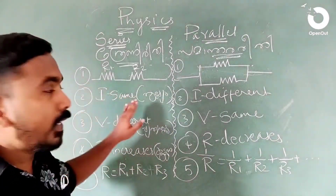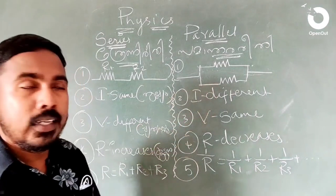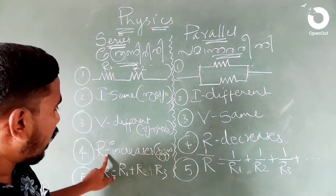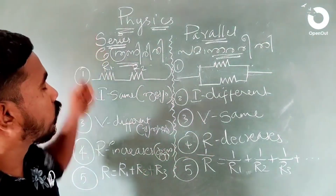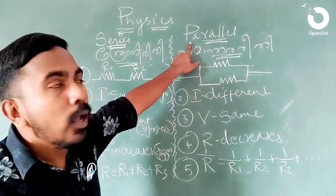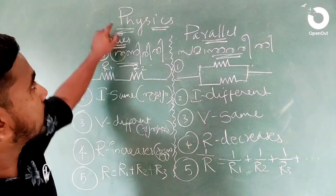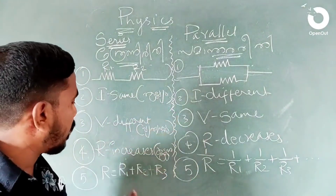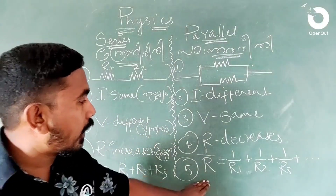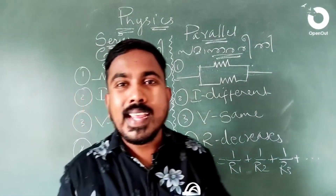In a series connection, the current is the same. In a parallel connection, the current is different. The voltage is different in series and the same in parallel. R increases in the case of series connection; R decreases in the case of parallel connection. The series resistance equation is R_total = R1 + R2 + R3. For parallel: 1/R = 1/R1 + 1/R2 + 1/R3.